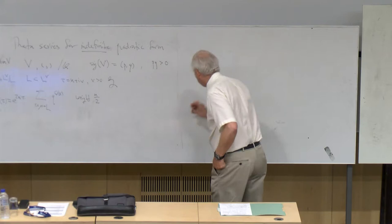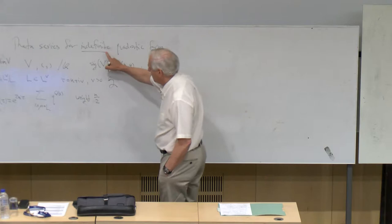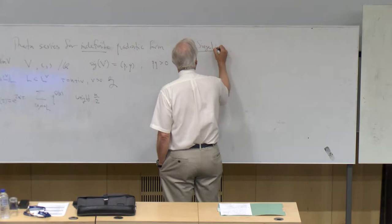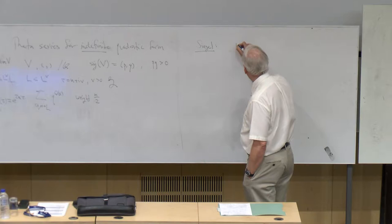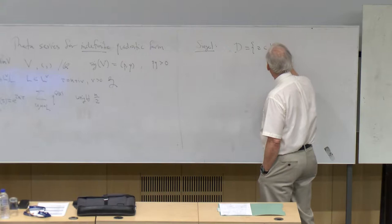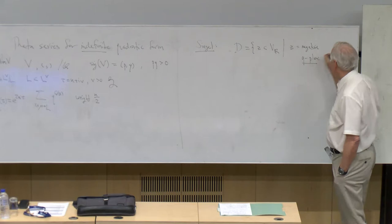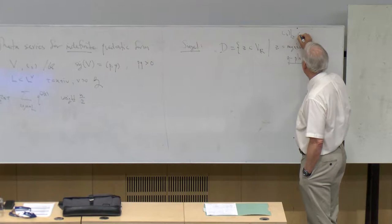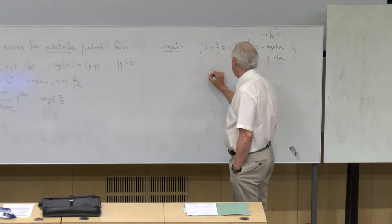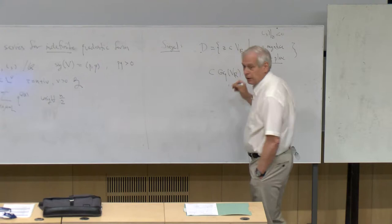To start out with a little history: very early in the history of theta series for indefinite quadratic forms is the work of Siegel. What Siegel did is he looked at the space D, which is the set of all Z inside V_R such that Z is a negative Q-plane — it's a real negative Q-plane. When you take the quadratic form and restrict it to Z, it's negative definite. So D is sitting inside the Grassmannian of all Q-planes in the underlying real vector space.